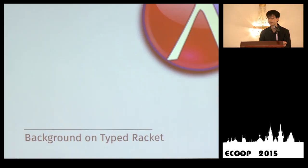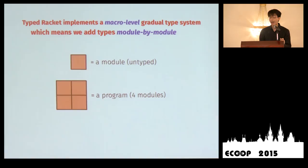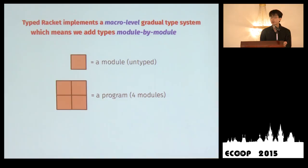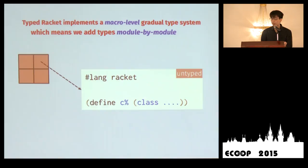Let me present some background on how Typed Racket works. Typed Racket is a macro-level gradual type system, meaning we work on a module-by-module granularity. Programs are collections of modules — orange boxes are untyped modules. Inside one of these untyped modules, we find Racket code starting with hash-lang-racket, with some definitions and expressions — for example, some class definitions and uses.